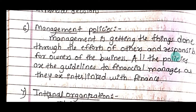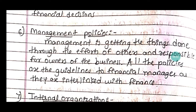The sixth internal factor is management policy. What is management policy? It is also an internal factor. Management means getting things done through the efforts of others, and it is the responsibility of the owner of the business. All policies or guidelines related to finance have to be taken by the finance manager. Management policy is kept and controlled by the finance manager.